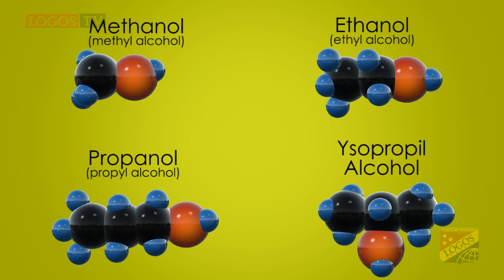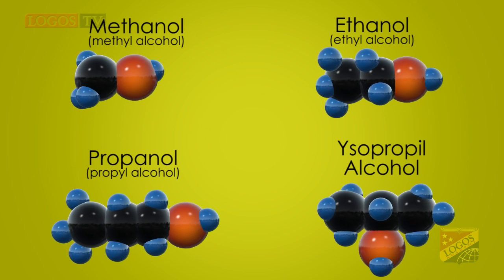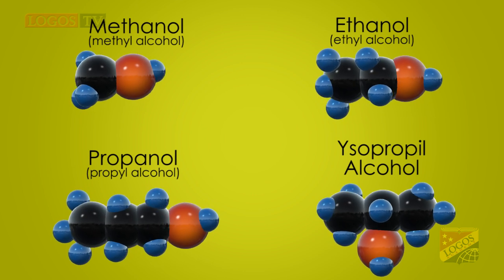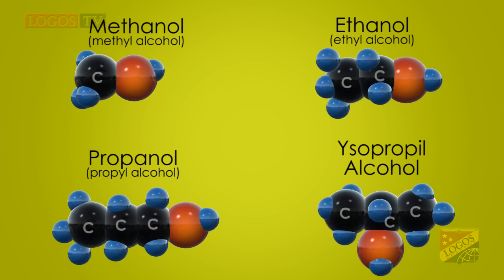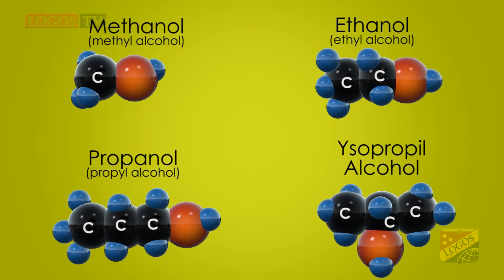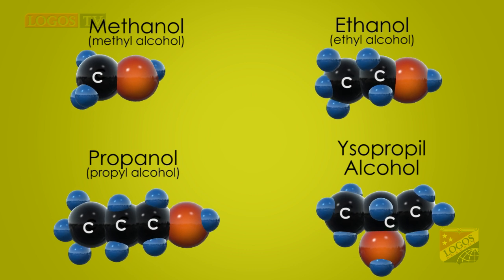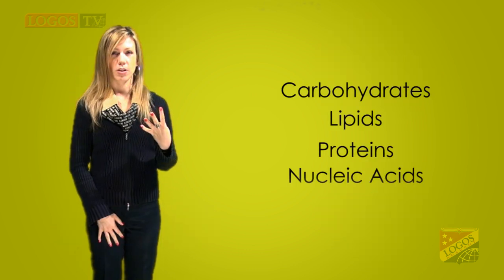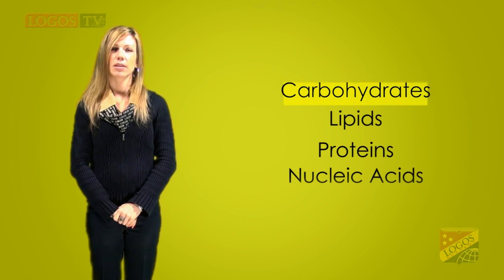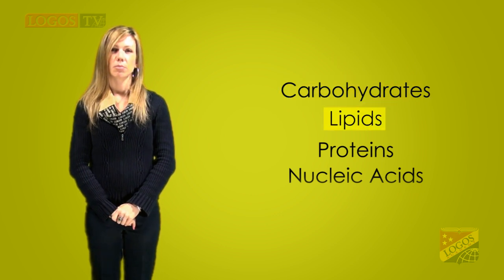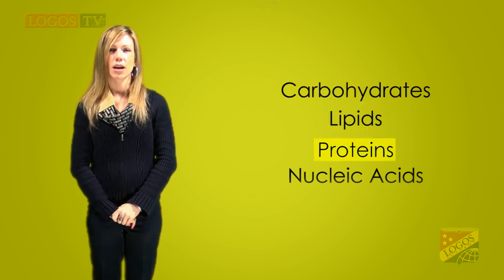Here is a picture of some organic compounds. Organic compounds contain carbon and are found in living things. There are four groups of organic compounds: carbohydrates, lipids, proteins, and nucleic acids.